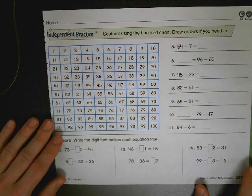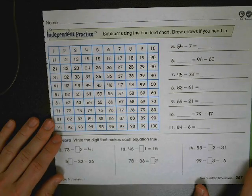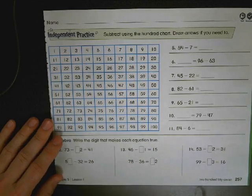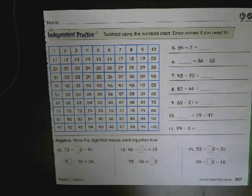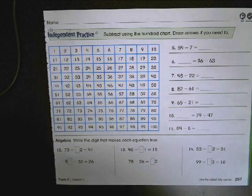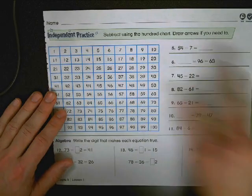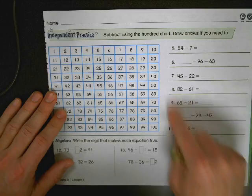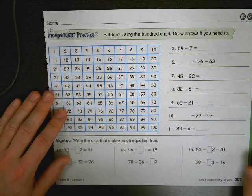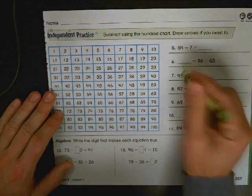Using the hundreds charts to add and subtract tens and ones. First question up at the top. 54-7. I'm going to use different colors throughout this. You don't have to. You can just use a pencil. I'm going to show you a strategy. You're going to get some independent practice down here and then we'll do a little algebra together. And you're going to get a chance to do the back on your own.